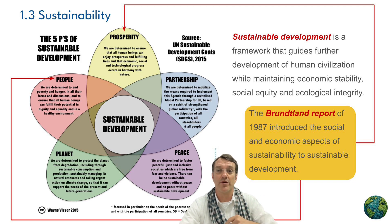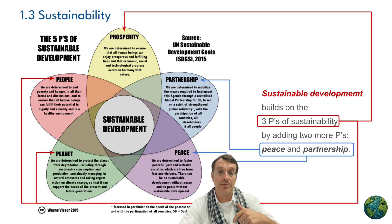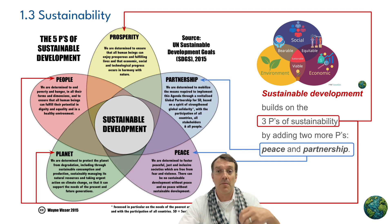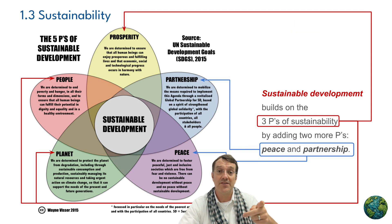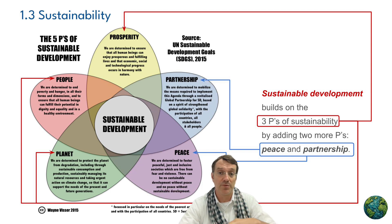The Brundtland model of sustainable development builds on the three P's of sustainability from our previous video — people, planet, and profit — but adds two more P's: peace and partnership. This is a holistic approach that addresses multiple aspects of human and environmental well-being.